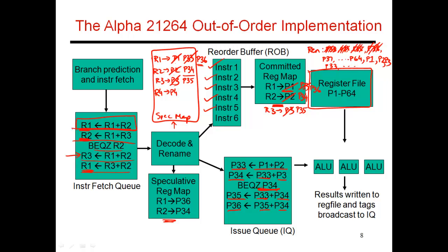When this instruction entered the pipeline, I said I won't need P3 anymore and might need P35. But I don't put P3 back in the free pool, because if there was an exception before this point, I would still need to refer to P3. Likewise, if this branch were mispredicted and I had to go along the other correct path, maybe along that path I would still need to read R3, which would refer to P3, not P35. So I cannot throw away P3 until I know for sure that all previous instructions have completed successfully and all previous branches have been predicted correctly. It is only when this instruction commits that I am sure P35 is the permanent home of that result, and no one is going to need the result in P3. So it's only at that point that I free up register P3.